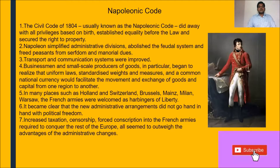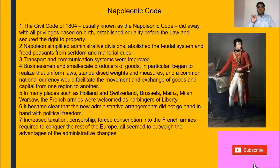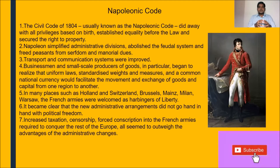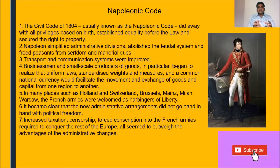Today we are going to learn about the Napoleonic Code. The Napoleonic Code got its name because this code was given by Napoleon. This code is also known as the Civil Code of 1804. He did away with the privileges which were based on birth, he established equality before the law, and secured the right to property.